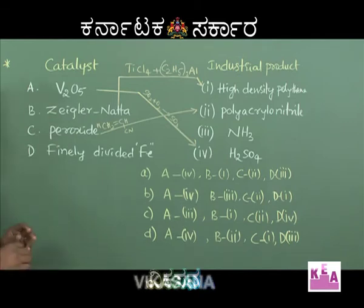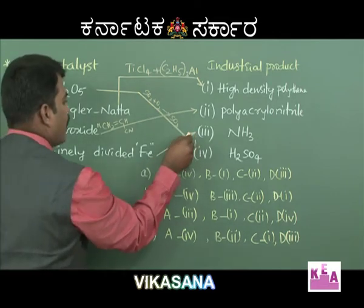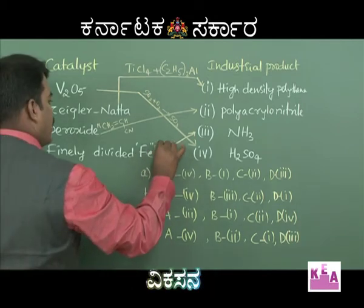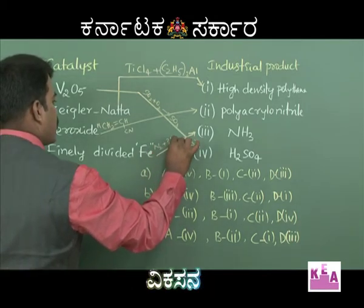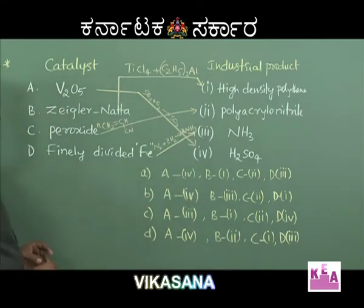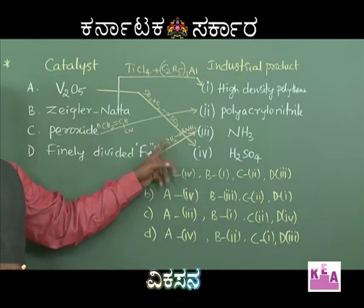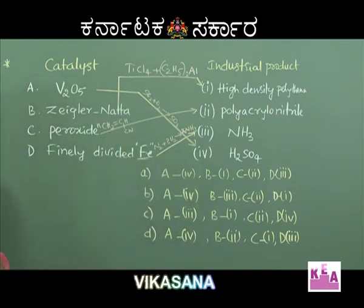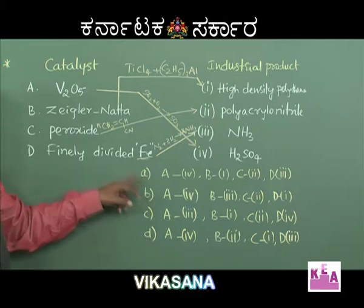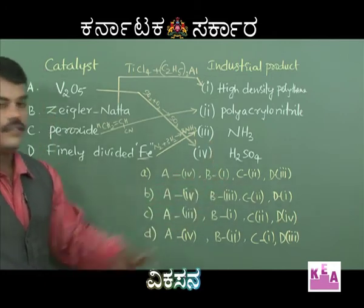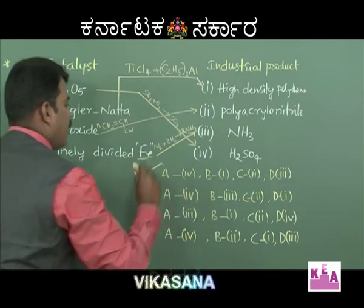The manufacture of ammonia by Haber's process uses N₂ + 3H₂ → 2NH₃, with finely divided iron as a catalyst and MoO as a promoter. So the matches are: A→4 (vanadium pentoxide→sulphuric acid), B→1 (Ziegler-Natta→HDPE), C→2 (peroxide→PAN), D→3 (iron→ammonia). Therefore, option A must be the correct option.